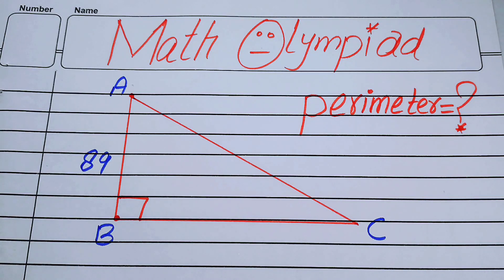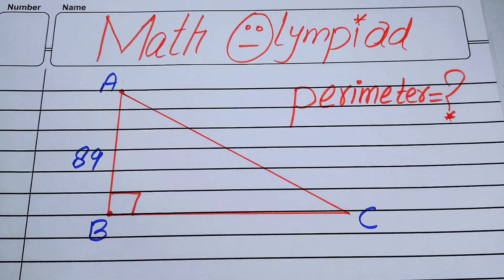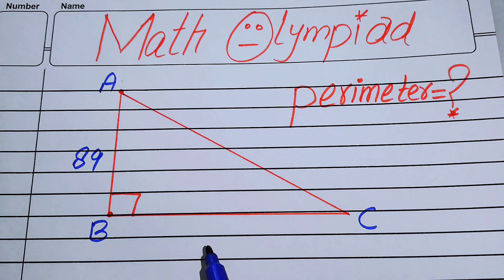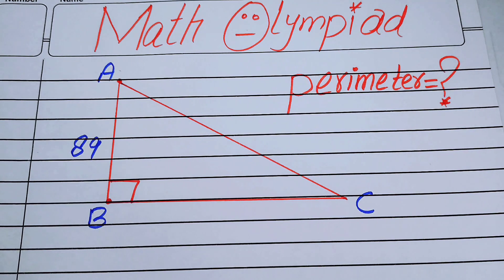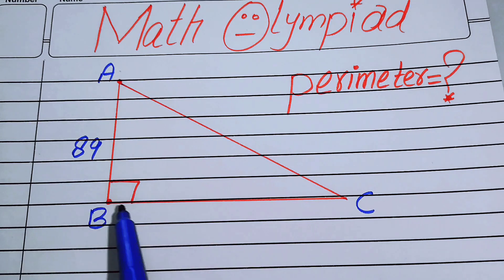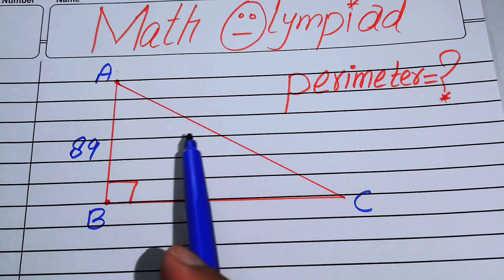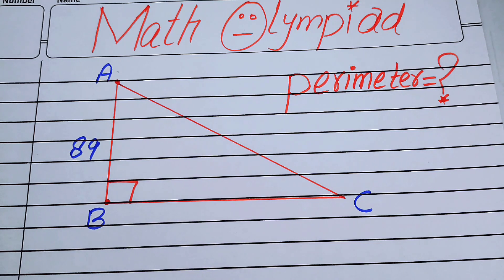Hello everyone, welcome back to the Map of Mathematics. In this video we are going to solve a nice math olympiad geometry problem. We will find the perimeter of a right triangle. The perimeter is the boundary of the triangle, so we need to find the length of the boundary — that is the perimeter.